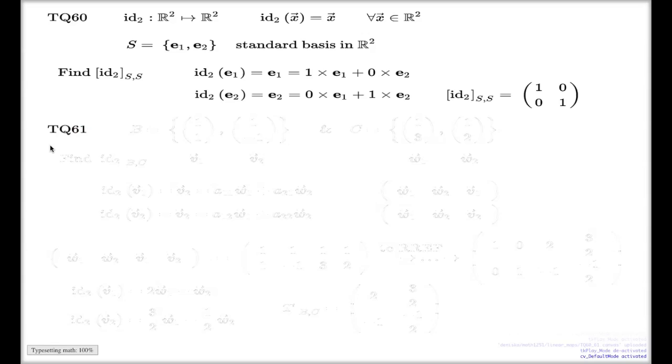Now, question 61 shows that if you alter the basis, if you take different basis here and different basis here, then even though you will be looking at the identity map, you no longer will be having such a simple conclusion as before.